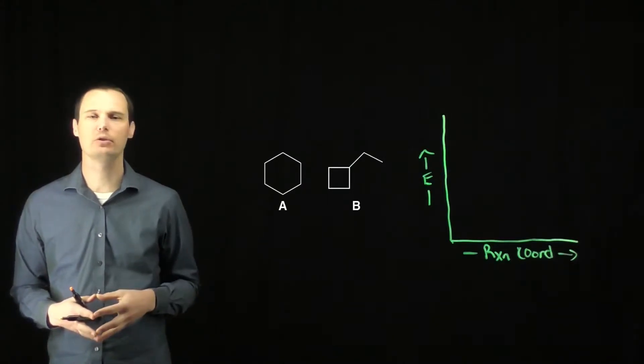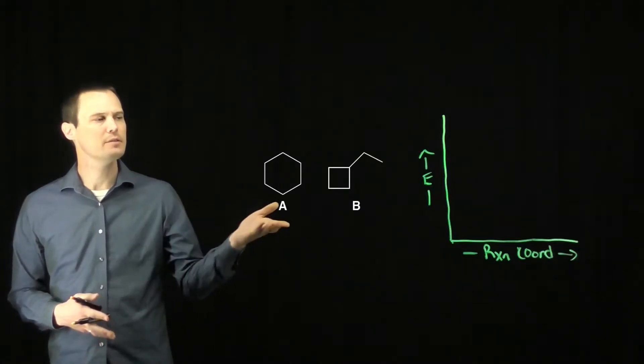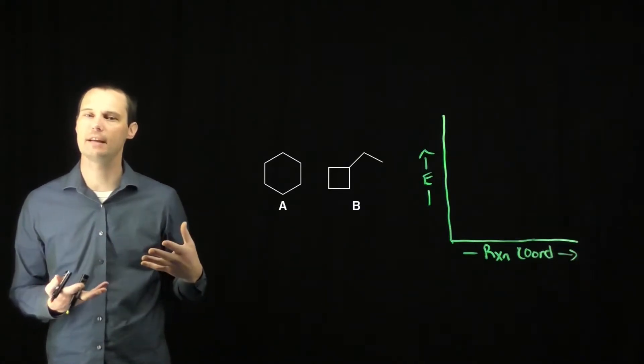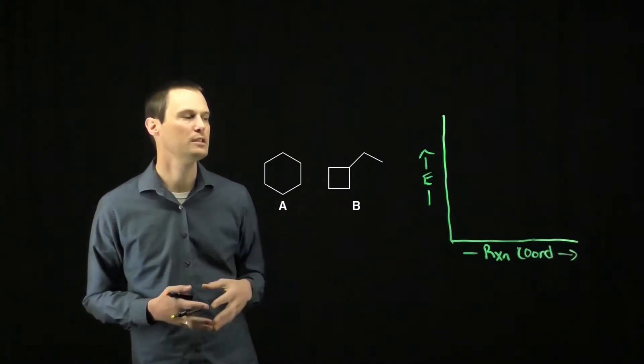This question asks us which of these two molecules will have the largest delta H, the largest heat of combustion. Both molecules have the same molecular formula, so that's not the difference. The difference is in the size of the ring. We have a cyclohexane ring versus a cyclobutane ring.